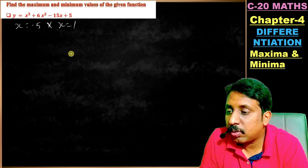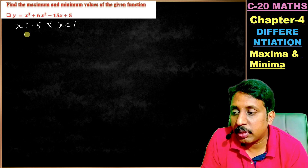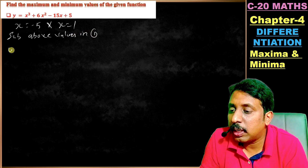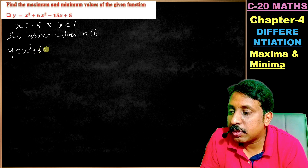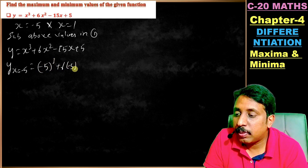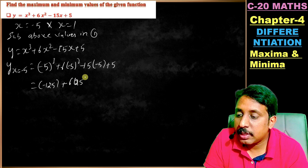Now substitute x = -5 into equation 1: y = x³ + 6x² - 15x + 5. So y at x = -5 equals (-5)³ + 6(-5)² - 15(-5) + 5.